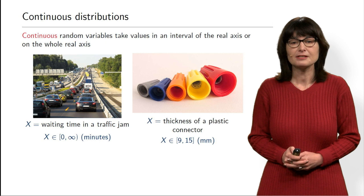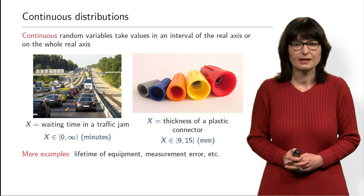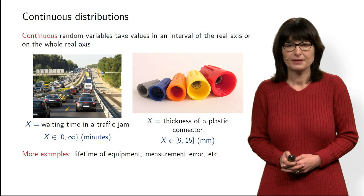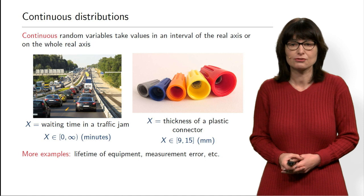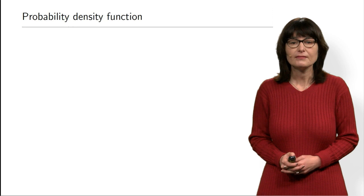These are just some examples, but we will see many more. These are very important random variables. More examples: the lifetime of equipment — it can fail at any moment. Measurement error can be anything on a certain, hopefully not very large, interval.